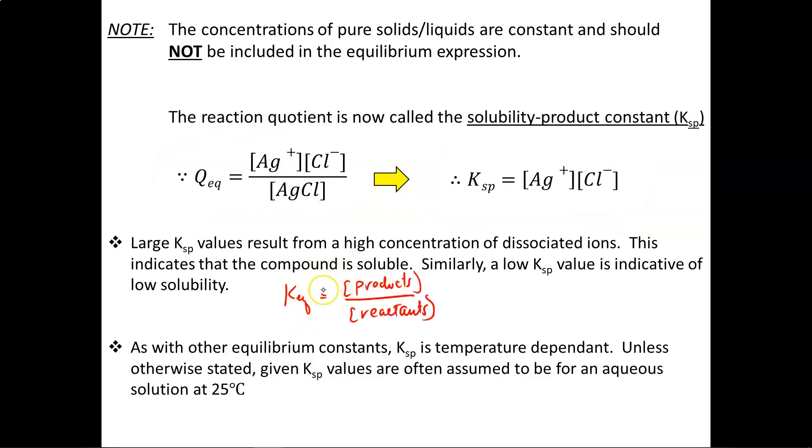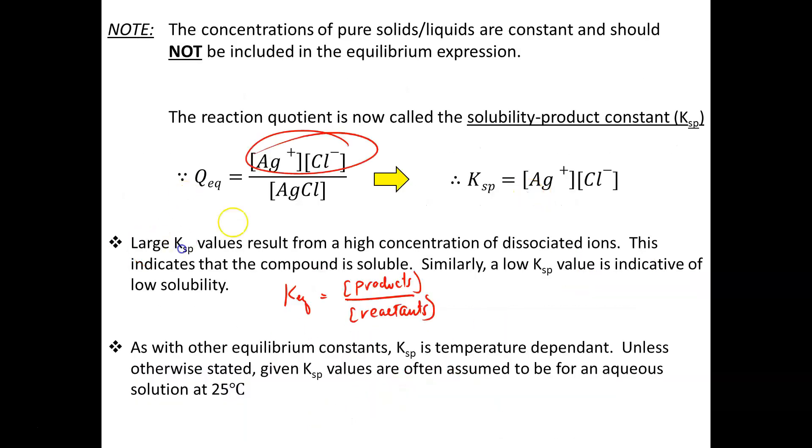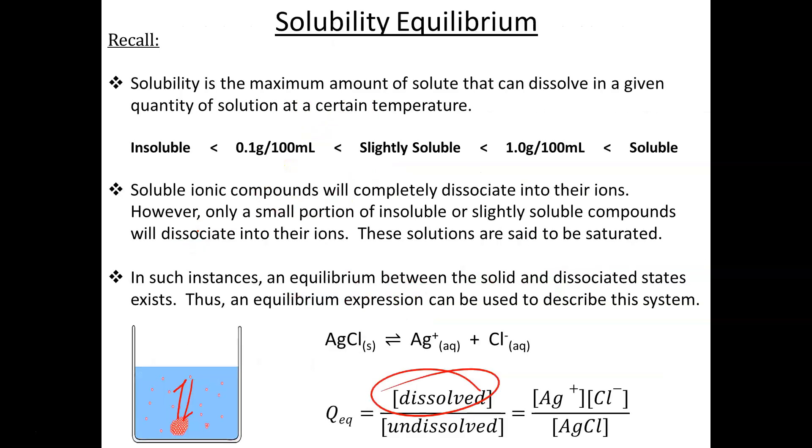When we have a large Keq value, that indicates the numerator is large—the concentration of products is high. Similarly, a large Ksp value tells us that the numerator is very large. What's in the numerator? The dissolved component. So that tells us the compound dissolves very well. On the other hand, a very low Ksp value tells me the denominator is very large—the undissolved component. So if I have a lot more undissolved, that tells me the substance is likely insoluble.